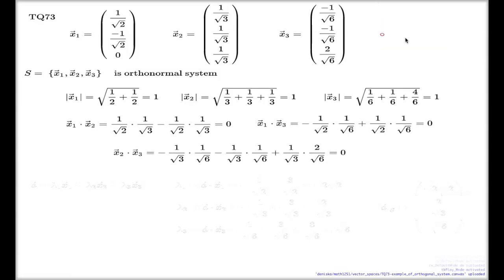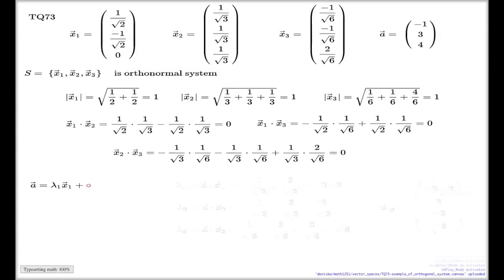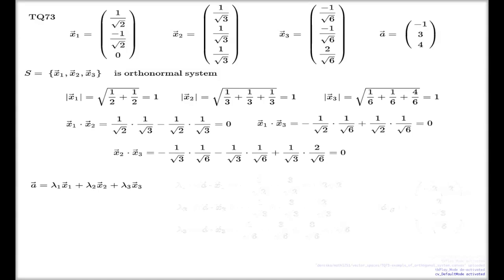The second part of this question says: take a vector A with components negative 1, 3, 4, and compute the linear representation of this vector with respect to my orthonormal system — with respect to my basis, in fact. Because now I can safely claim that system S is a basis. We need to find these coefficients lambda 1, lambda 2, lambda 3. Having the orthonormal system makes everything else very easy. All I have to do is take the dot products of my vector with the elements of my orthonormal system.